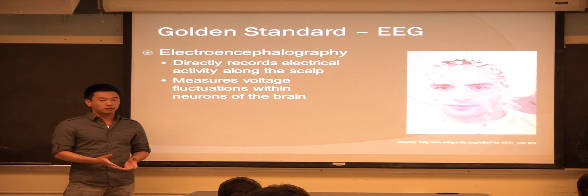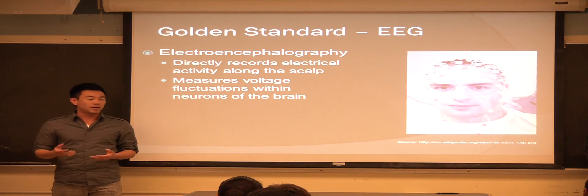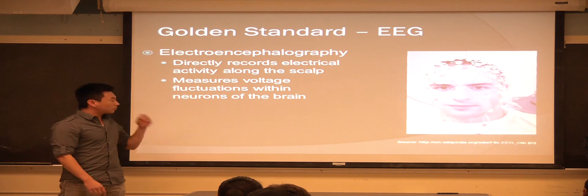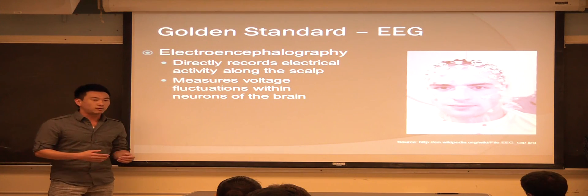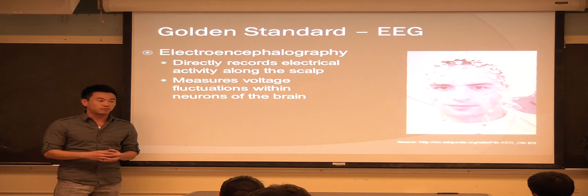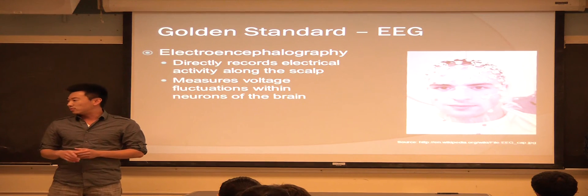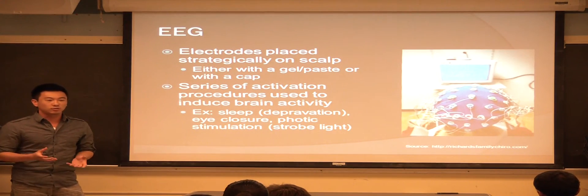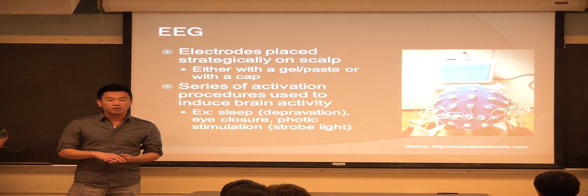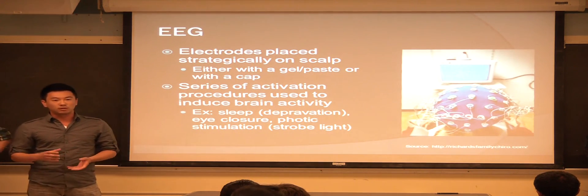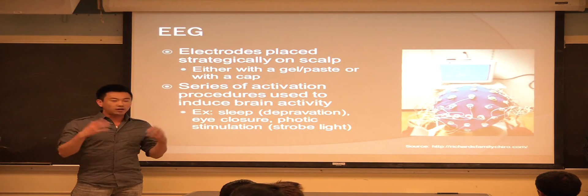First, we're going to talk about what's considered the gold standard when it comes to detecting brain activity. The most direct way of detecting signals in the brain is from the EEG or electroencephalography. What it does is they place about 20 or so electrodes on your scalp or on your head. This can be done with a cap or it can be done with a certain gel paste.